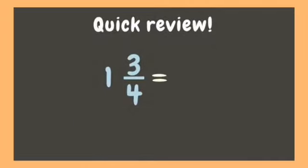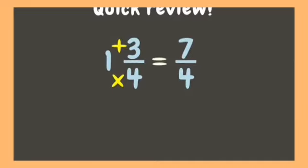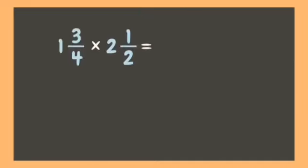To change a mixed number into an improper fraction, we multiply the denominator by the whole number — four times one is four — and then add it to the numerator: plus three is seven. Then we simply copy the denominator, four. So one and three-fourths is equivalent to the improper fraction seven-fourths.